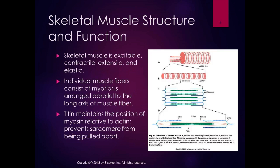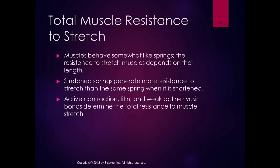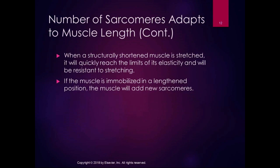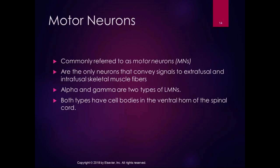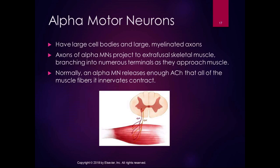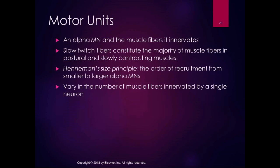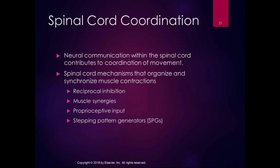We're going to move into the spinal region part of the motor system. We said earlier that movements are generated when we combine somatosensory information, networks of spinal interneurons, and descending motor commands, and they all interact in the spinal cord to elicit motor neuron firing.